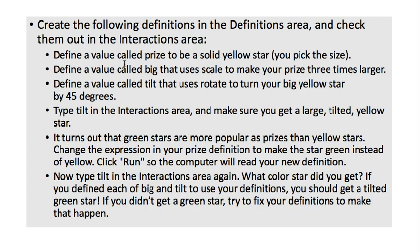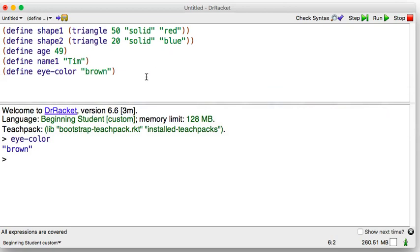Define a value called prize to be a solid yellow star. We don't have to hit Run every time I type a line. I can type in a bunch of lines. But I'm going to check star prize first. Okay, that worked.